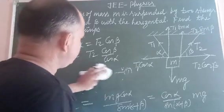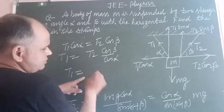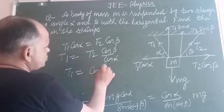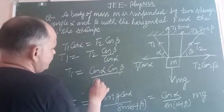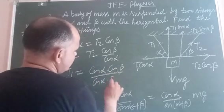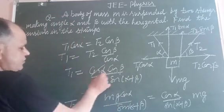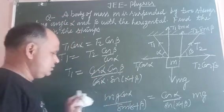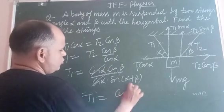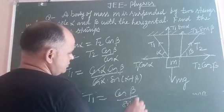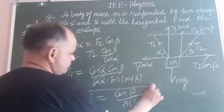Now put this value, then you can easily find out the value of T1. T1, this is T2, so cos alpha into cos beta over cos alpha into sin of alpha plus beta. This cos alpha divided, we got T1 equal to cos beta upon sin of alpha plus beta.